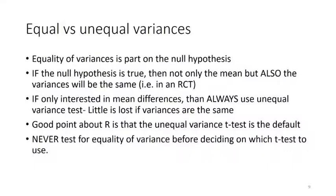If you're only interested in mean differences — for example, health economists are only interested in mean differences, certainly not medians — then you should always use the unequal variance test, not the equal variance test, because little is lost if the variances are the same and it's much more robust. The good point about R is that the unequal variance test is actually the default. But there's the four-letter-word package called SPSS — you should never test for equality of variance before deciding which t-test to use. The basic reason is that if you have enough power to show a difference in variances, the central limit theorem applies and the t-test is perfectly valid with the equal variance test anyway. And you don't want to do one significance test conditioned on another because the p-value is totally uninterpretable.